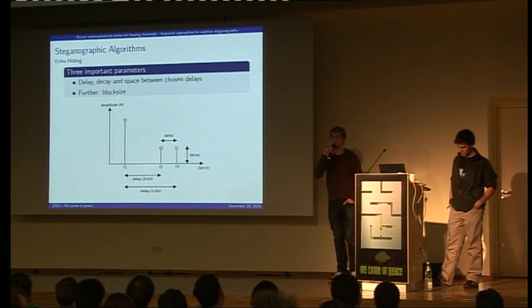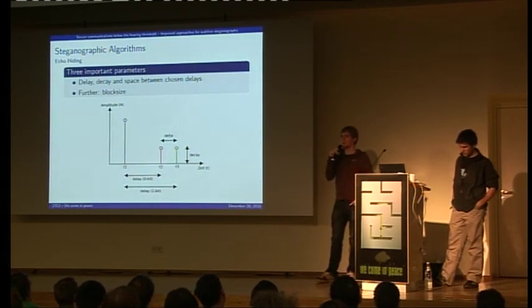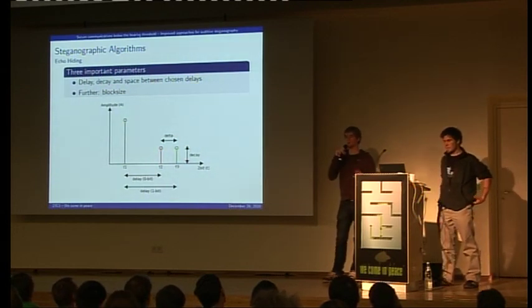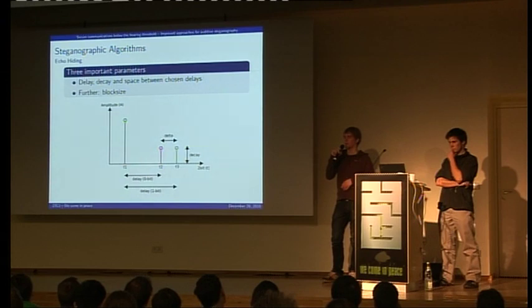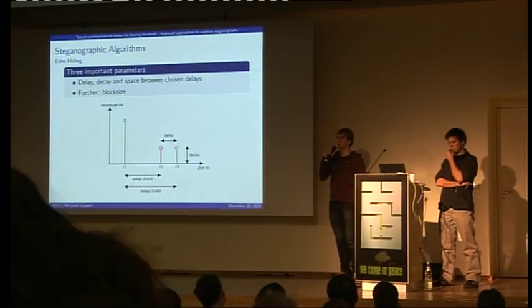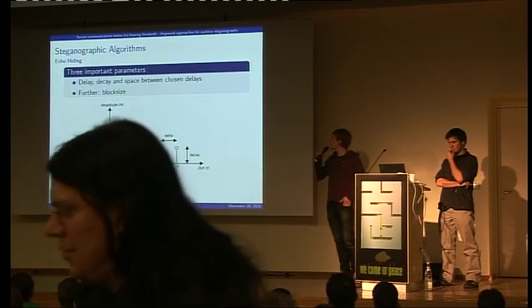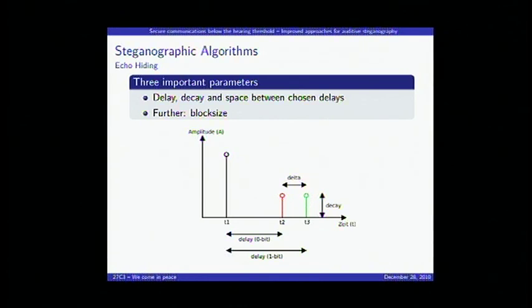The third parameter is the decay — the echo can't be as loud as the original signal. We built in some regulation: depending on the amplitude of the last few milliseconds of the signal, we choose an appropriate decay. Another parameter is the block size: you can't introduce an echo on a single sample, so you choose for example 20 milliseconds and introduce an echo every 20 milliseconds. The block size gives you the data rate.